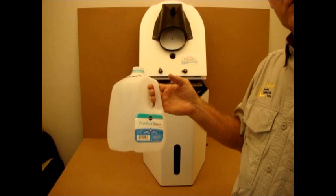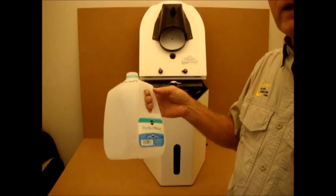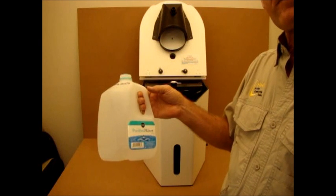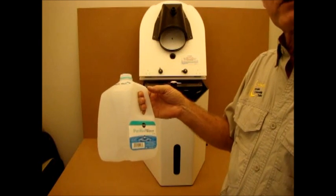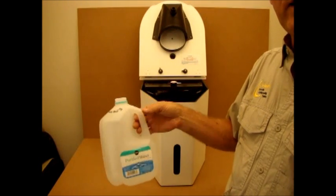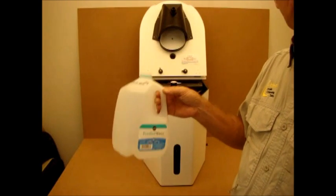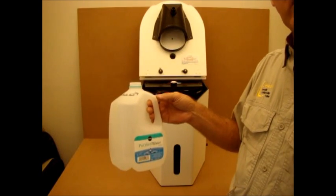There are a lot of advantages to using a one gallon jug, not the least of which is they're virtually free. When they become contaminated with scale, you can simply throw them away and replace it with a new one. You can also, when it becomes full, cap it off, set it aside and install a new one until you can find a location where you can dispose of it.